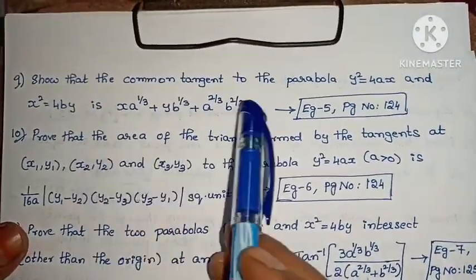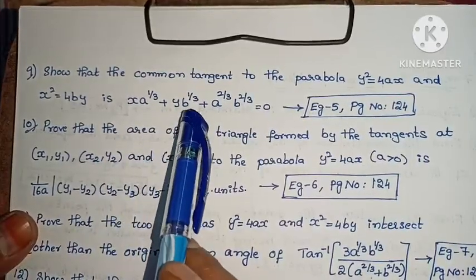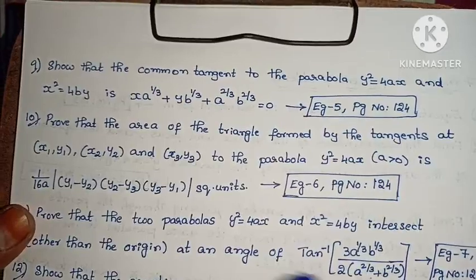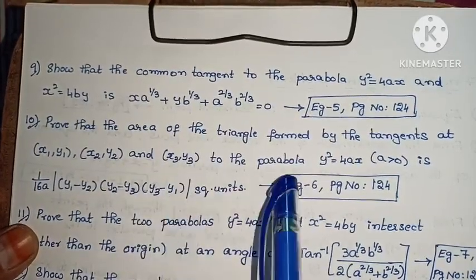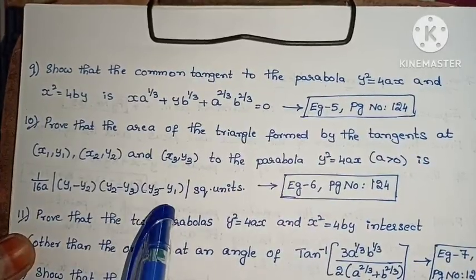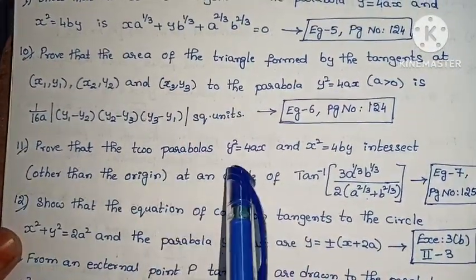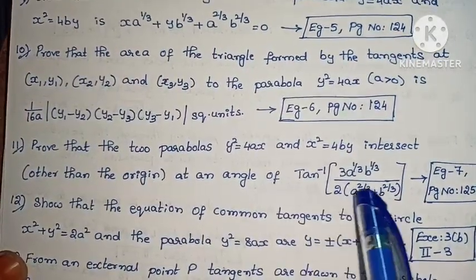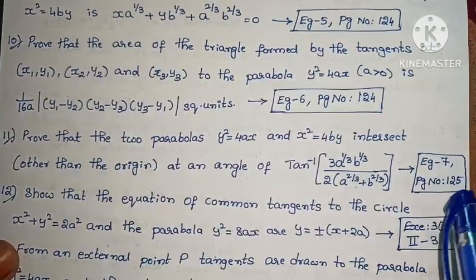Next, show that the common tangent to the parabolas y² = 4ax and x² = 4by is x·a^(1/3) + y·b^(1/3) + a^(2/3)·b^(2/3) = 0. Example 5, page number 124. Next, prove that the area of the triangle formed by the tangents at (x₁, y₁), (x₂, y₂) and (x₃, y₃) to the parabola y² = 4ax where a > 0 is (1/16a)|y₁ - y₂||y₂ - y₃||y₃ - y₁| square units. Example 6, page number 124. Next, prove that the two parabolas y² = 4ax and x² = 4by intersect other than the origin at an angle of tan⁻¹(3a^(1/3)b^(1/3) / (2(a^(2/3) + b^(2/3)))). Example 7, page number 125.